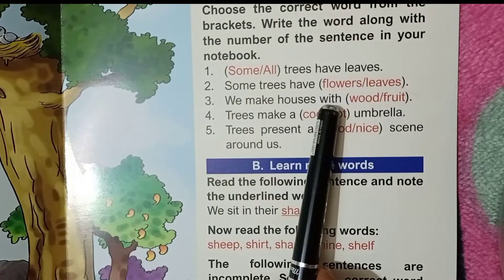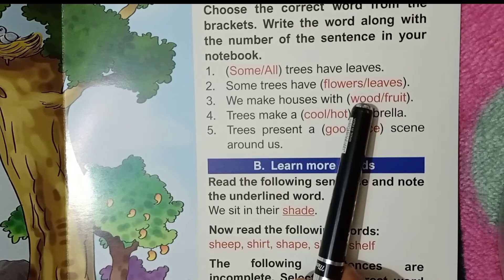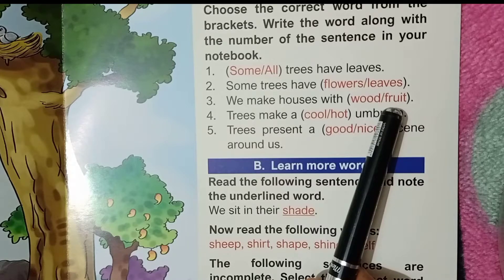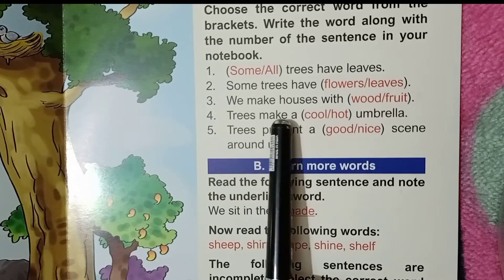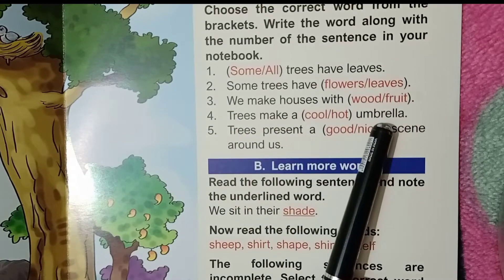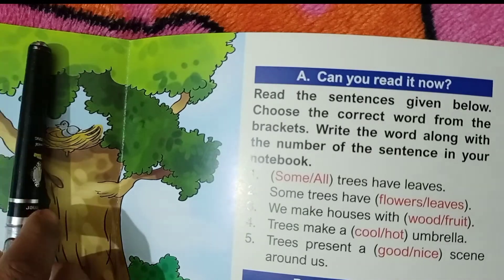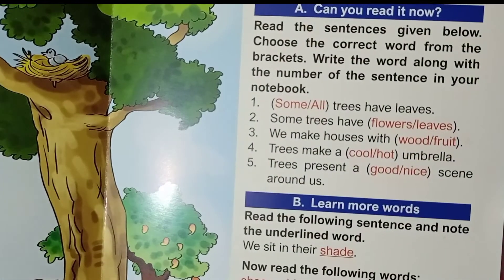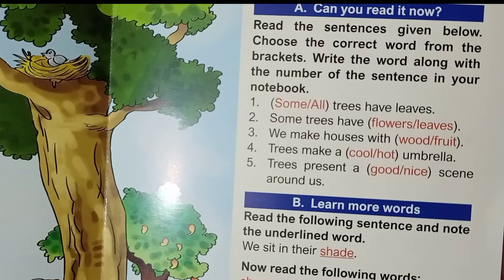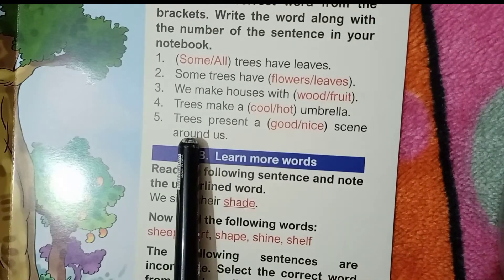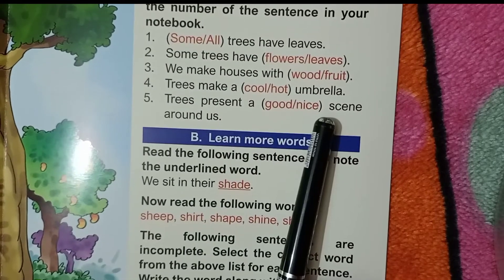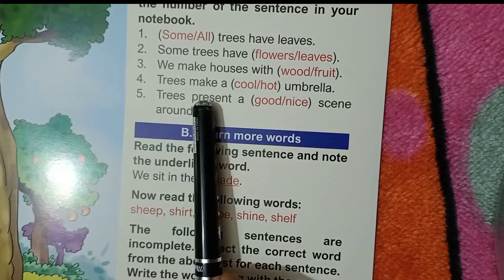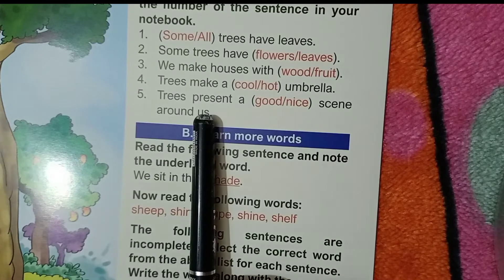Number 3: We make houses with — what do we use? We use wood, not fruits. We eat fruits; we do not make houses with them. Number 4: Trees make a cool or hot umbrella? It makes a cool umbrella. The sun rays are blocked so we don't feel hot — we feel cool. Number 5: Trees present a good or nice scene around us? Trees present a good scene around us.